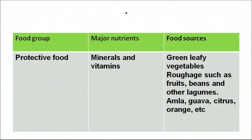The next category is protective food. The major nutrients providing protective food are minerals and vitamins. Food sources include green leafy vegetables, fresh fruits, beans, amla, guava, and all fruits and vegetables.